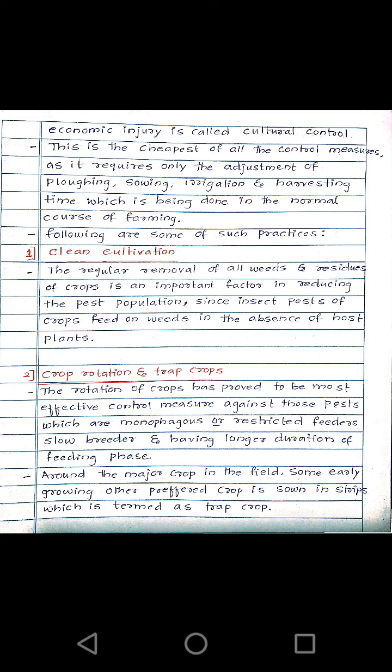When crops grow in the soil, we have to clean the field and remove all weeds and crop residues, so that we can reduce the population of insects that feed on these weeds in the absence of the host plant. Before growing the crops, we have to clean the fields — this is one of the cultural methods of insect control.